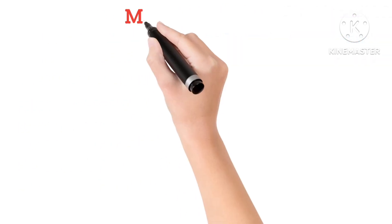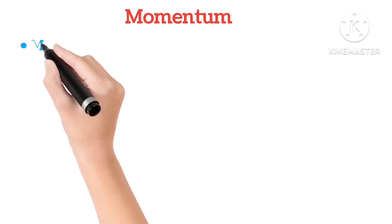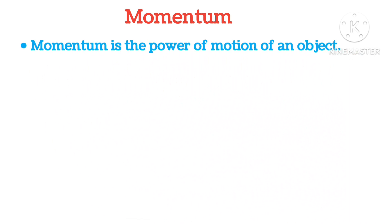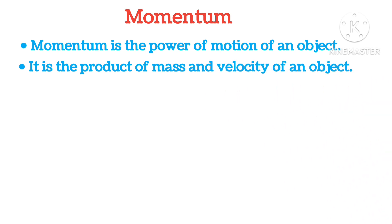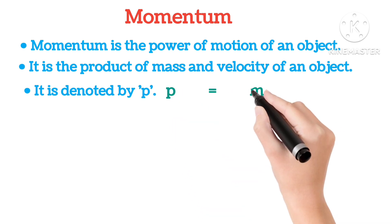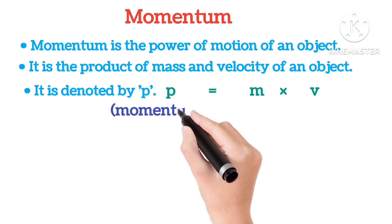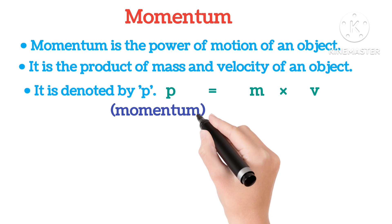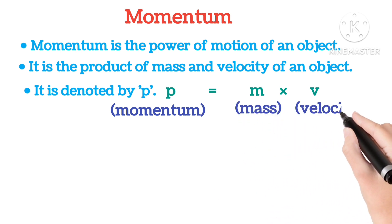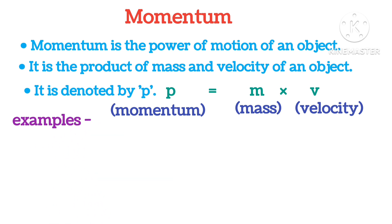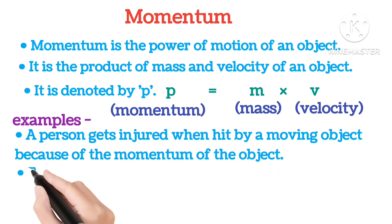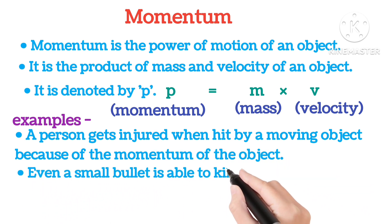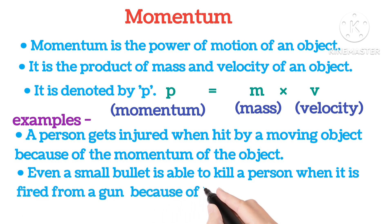Momentum. Momentum is the power of motion of an object. It is the product of mass and velocity of an object, and is denoted by P. P = M × V, where M is the mass and V is the velocity. For example, a person gets injured when hit by a moving object because of the momentum of the object. Even a small bullet is able to kill a person when fired from a gun because of its momentum due to great velocity.